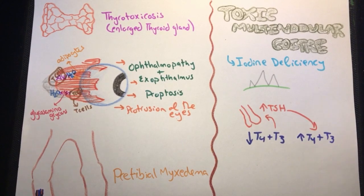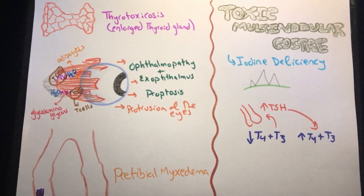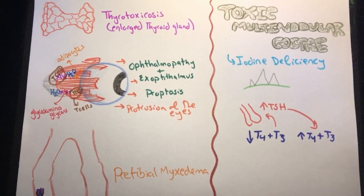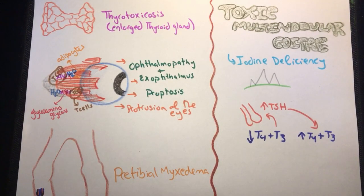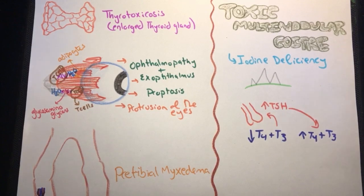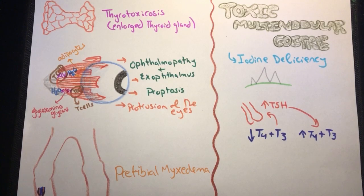Another cause of primary hyperthyroidism is hyperfunctioning toxic multinodular goiter, which occurs in endemic areas with iodine deficiency, commonly in mountainous regions like the Himalayas. Iodine deficiency causes decreased thyroid hormones, stimulating TSH from the pituitary to increase hormone production to normal levels. Long-standing goiter will ultimately result in hyperthyroidism with a diffusely enlarged thyroid gland.